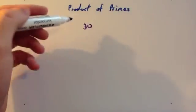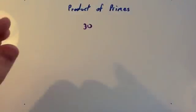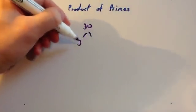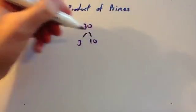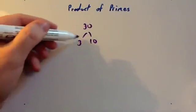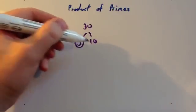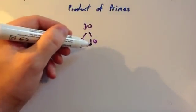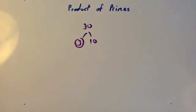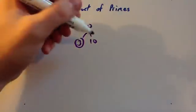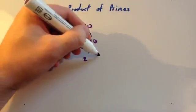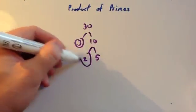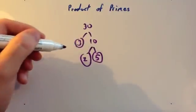To write 30 as a product of primes, first think of two numbers that will multiply together to give you 30. I'm going to start off with 3 and 10. 3 is a prime number, so you're going to circle that. 10 isn't. Now think of two numbers that times together to give you 10. Well, 2 times 5 is 10, so 2 times 5. 2 is prime, so you circle that. 5 is prime, so you circle that.